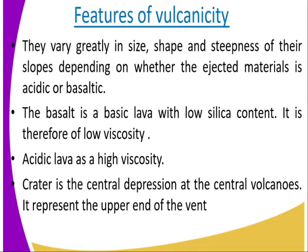There are three types of magma, and the major ones are acidic and basaltic. Basaltic is a basic lava with low silica content and therefore low viscosity. That means cooling and solidification take place while it moves very far from the vent, forming a gentle-sloping volcano. Acidic lava, which is of high viscosity and high silica content, results in cooling and condensing near the vent, thus forming steep slopes.